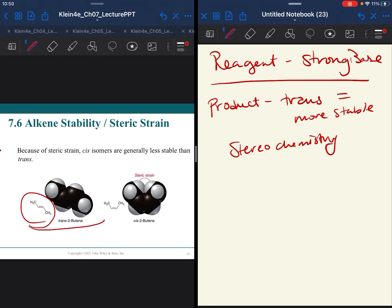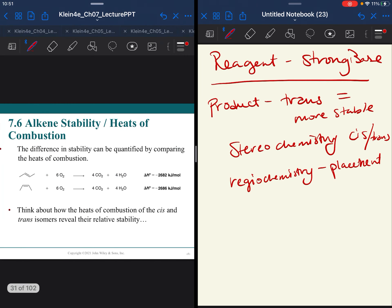Stereochemistry with double bonds is going to be cis versus trans. Regiochemistry, this is talking about actual placement. Is the double bond between carbon 1 and 2 or 2 and 3? Regiochemistry actually becomes a lot more important.